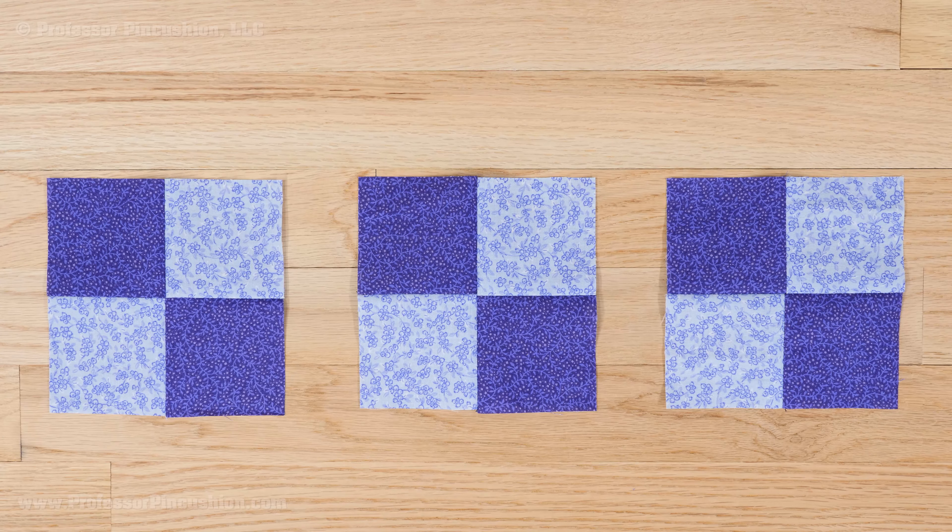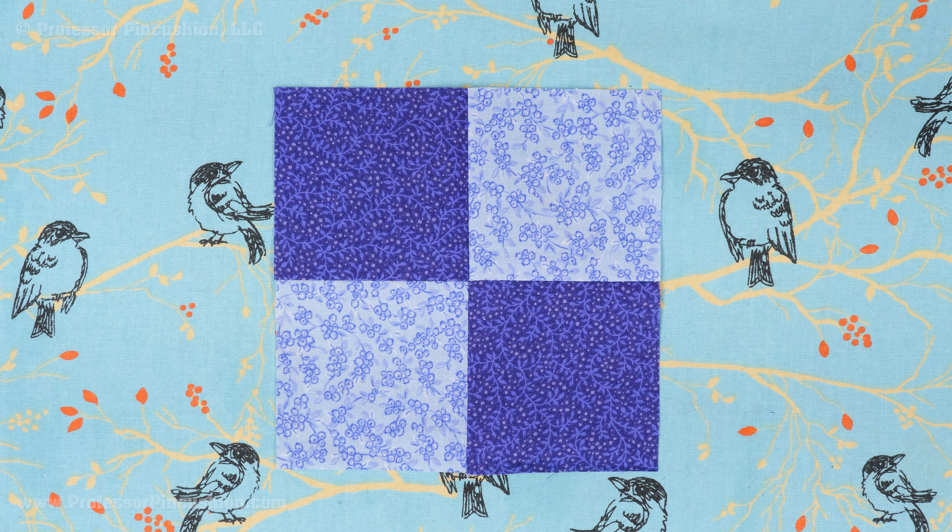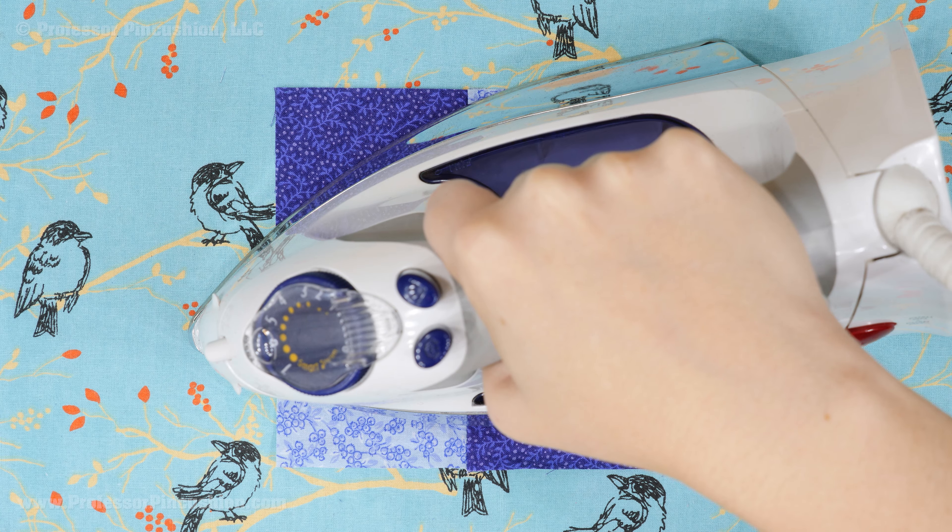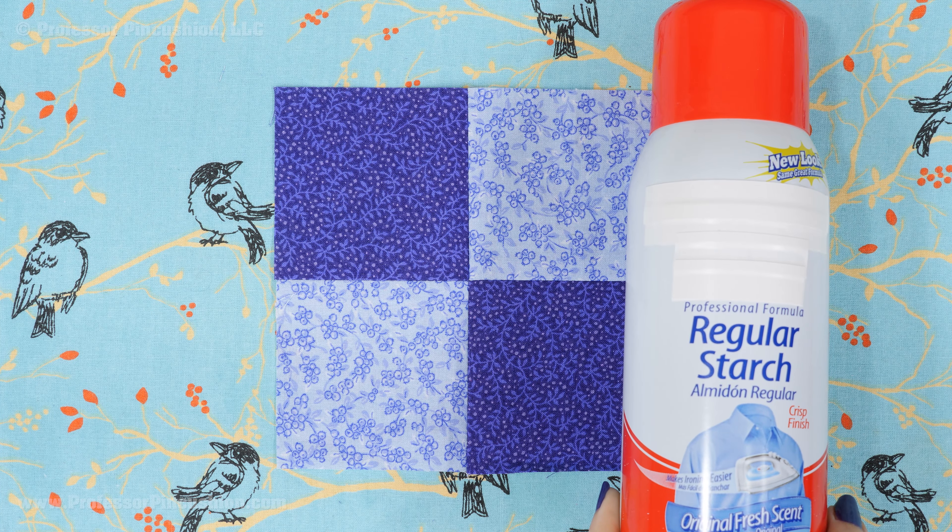Squaring should be done for all your blocks before sewing them together to create the quilt top. Before you square it, press the block as well as you can. Consider using a little spray starch on the block. You want to get it as flat as possible.